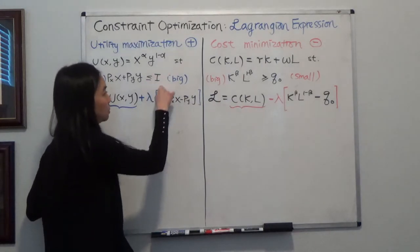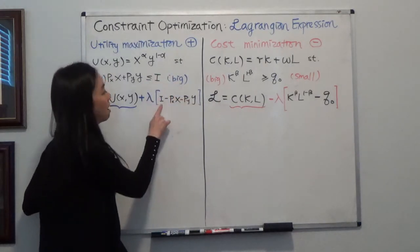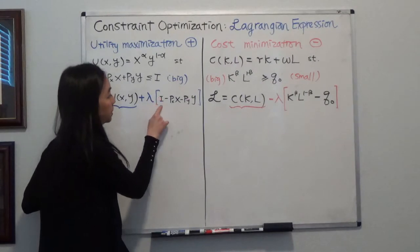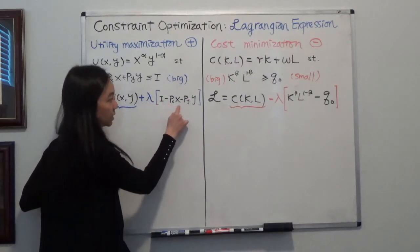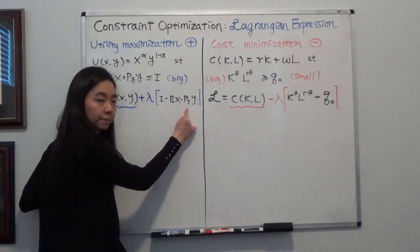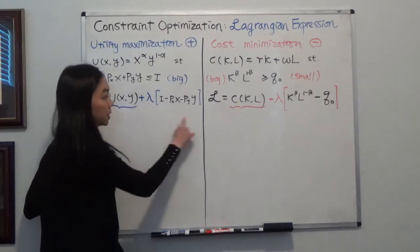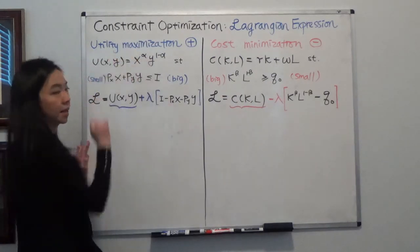So your budget is supposed to be greater, the bigger side, on the left-hand side. So your budget I minus PXX minus PYY. That's how you set up your Lagrangian when you're trying to maximize your utility.